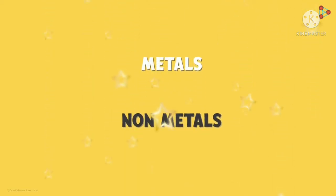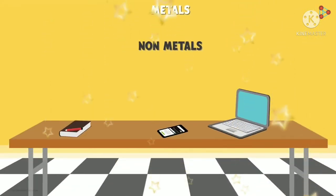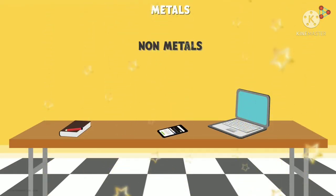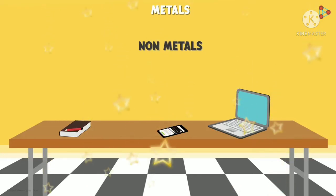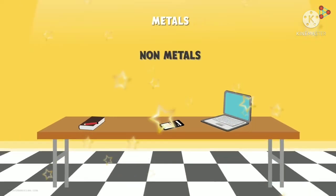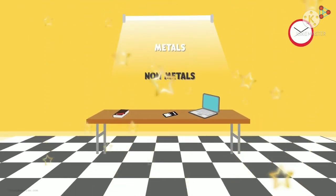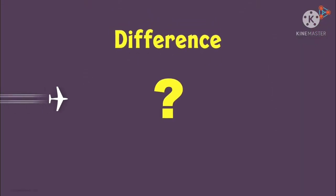You must have all heard the terms metals and non-metals. Can you look around and see if they exist in your surroundings? What is your table made up of — aluminium or wood? What about the phone or the laptop you are viewing this video on? Is it made up of metals and non-metals? As a matter of fact, it is. Almost everything around you will be made up of either a metal or a non-metal. But how do you differentiate between the two?